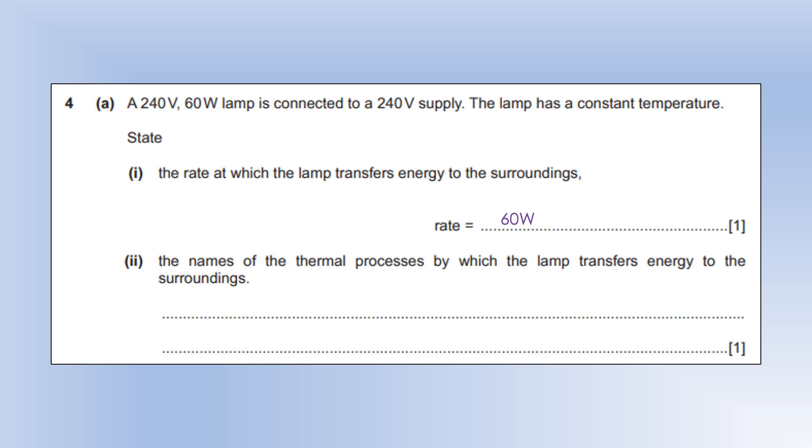Name the thermal processes by which the lamp transfers energy to the surroundings. Well, everything transfers by radiation. So that's always an option. And we're also going to get conduction transferring the energy from the filament of the lamp itself to the air around it.